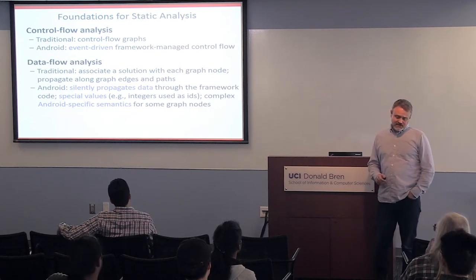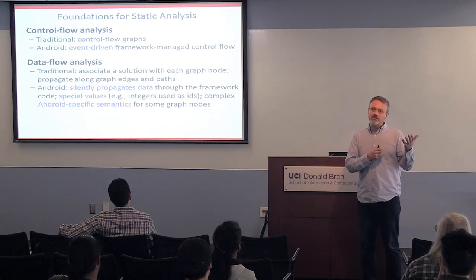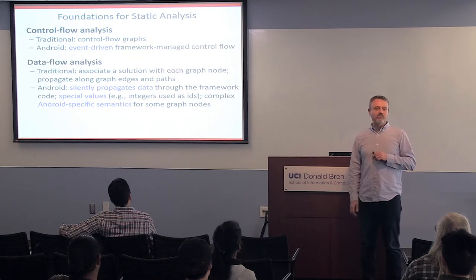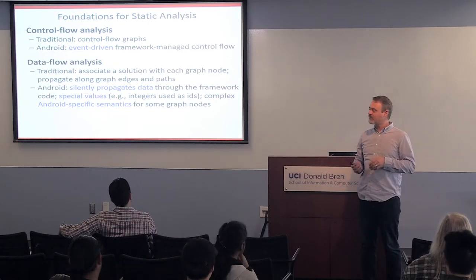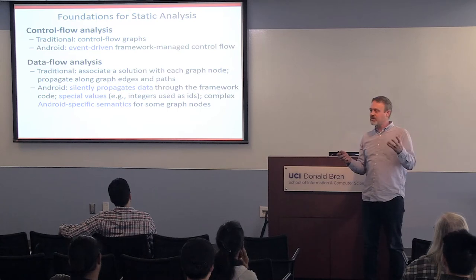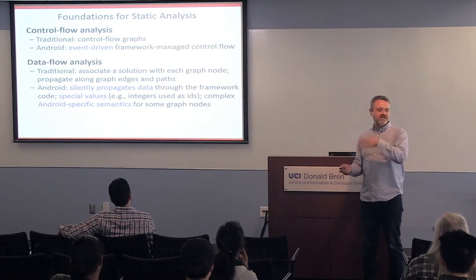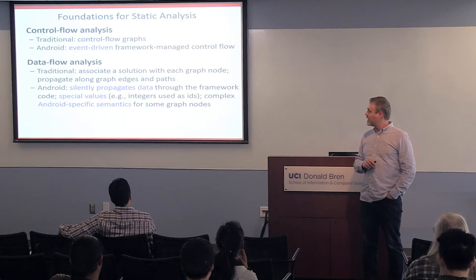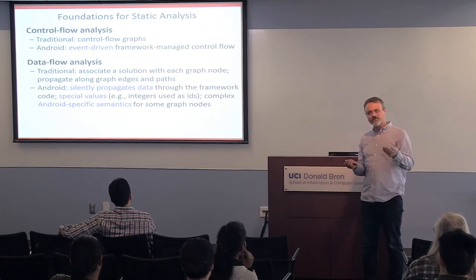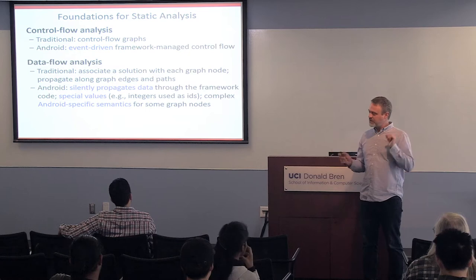Let me draw a quick analogy between traditional static analysis — in particular control flow and data flow analysis — and what happens in Android. In a compiler class you've seen the control flow graph, a static representation of possible runtime behaviors: nodes represent statements, edges represent sequencing, and based on that you can talk about paths, loops, and interesting runtime properties. We know how to do control flow analysis well, even for more complicated things like polymorphic calls in object-oriented programming or exceptions.